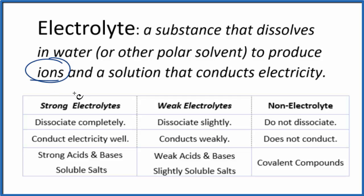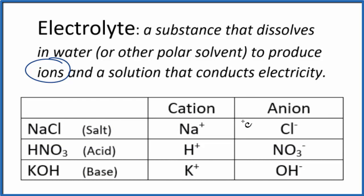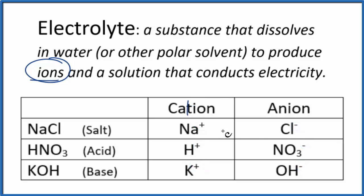How do we recognize ions? We're talking about elements, or groups of elements, that have a positive or negative sign written after them in their superscript. When you see that plus or minus, we're talking about ions. The positive ions are called cations; the negatives are anions. If you have something like salt, NaCl, that dissolves in water, it'll split apart into ions — producing the sodium ion and the chloride ion. So ions come from compounds that dissolve and dissociate in water.